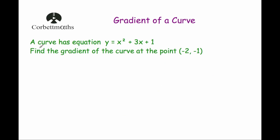Our first question: a curve has equation y equals x squared plus 3x plus 1. Find the gradient of the curve at the point (−2, −1). To do that, we find dy by dx. Differentiating: we bring the 2 down to get 2x, differentiating 3x gives plus 3, and differentiating 1 gives 0. So dy by dx equals 2x plus 3.